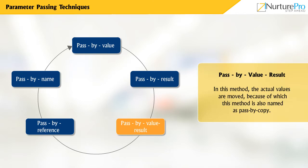Pass by value-result: In this method, the actual values are moved, which is why this method is also named pass by copy, as the copy of actual parameters is moved to formal parameters at the entry of the sub-program. Later, it is copied back when the sub-program is about to terminate. The actual parameter value initializes its relevant formal parameter and then behaves as a local variable.